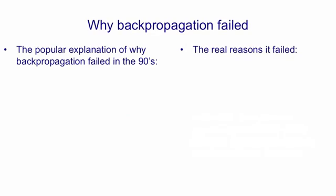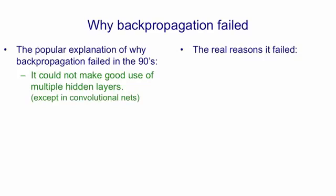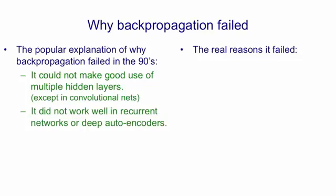The popular explanation of what happened to backpropagation in the late 90s was that it couldn't make use of multiple layers of non-linear features. This wasn't true in convolutional nets, which were the exception. But in general, people couldn't get feed-forward neural networks trained with backpropagation to do impressive things if they had multiple hidden layers, except for some toy examples. It also did not work well in recurrent networks or in deep auto-encoders. Recurrent networks were perhaps the place where it was most exciting, and so it was there that it was most disappointing that people couldn't make it work well.